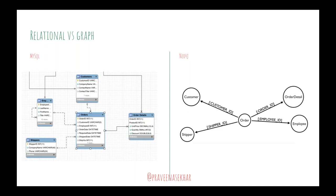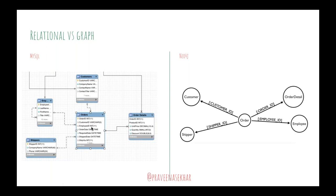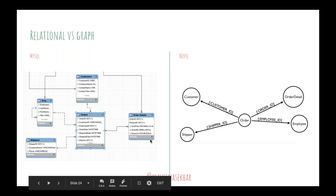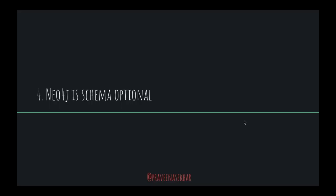Another scenario: an orders table in MySQL that links to customer, employee, shipper, and order details. This is modeled in Neo4j very similarly — you have an intermediate order node which links between all four other entities. Neo4j is also schema optional. Having a predefined structure helps us make sense of complex things, like a recipe to bake a cake or a tube map to navigate London.